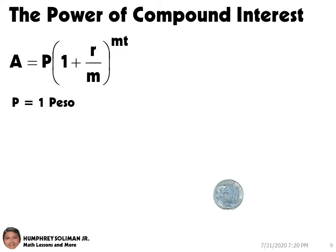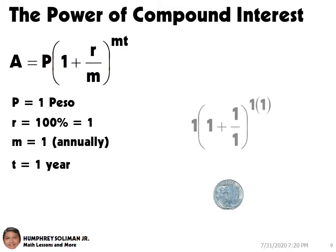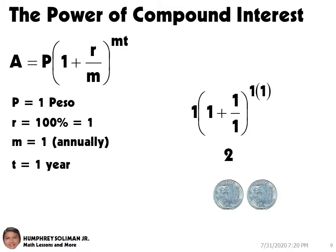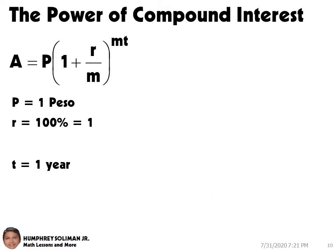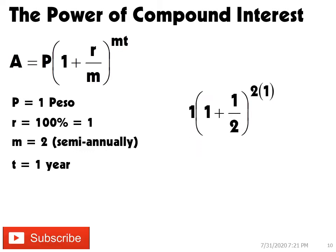Suppose you put 1 peso in the bank at a rate of 100%, and the bank compounds that money annually. After 1 year, you'd have twice the amount you invested. Now suppose the bank compounds the interest twice a year, M will be equal to 2 for semi-annually. In this case, you'd end up with 2.25 times your initial investment after 1 year.